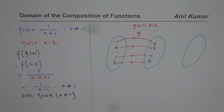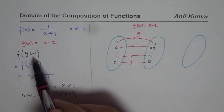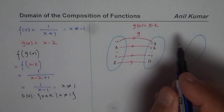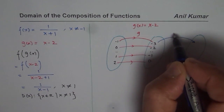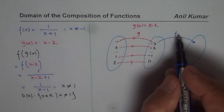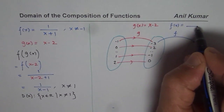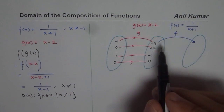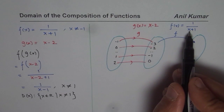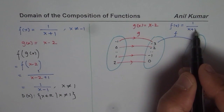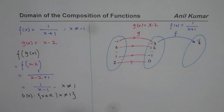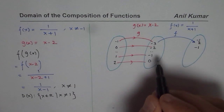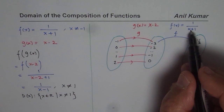In the first operation we performed the inside function. Now it is time to do the outside function, where the range of the inside function becomes the domain for f. The function here is f of x equals 1 over x plus 1. Substituting minus 3: 1 over minus 3 plus 1 gives minus one-half. Substituting minus 2: minus 2 plus 1 is minus 1, so 1 over minus 1 gives minus 1.